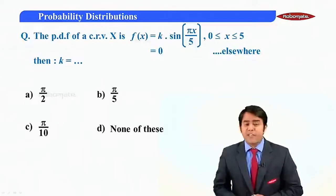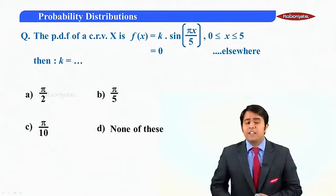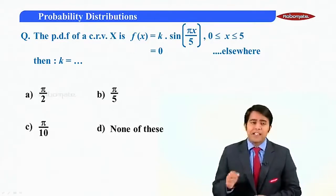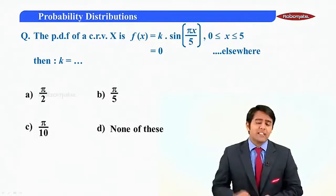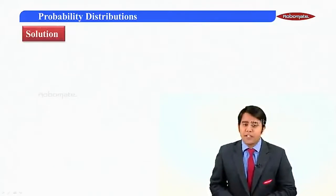The given question is as follows: f of x is k into sin pi x upon phi in the interval 0 to phi. That means x lies between 0 and phi. Then find the value of k. These are the four options given to us. Let us start with the solution part here.